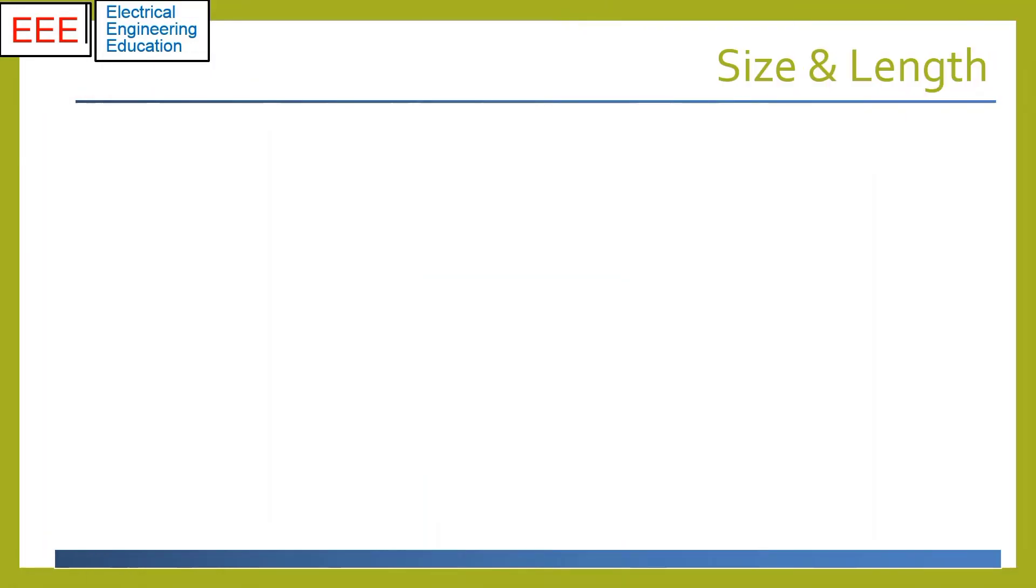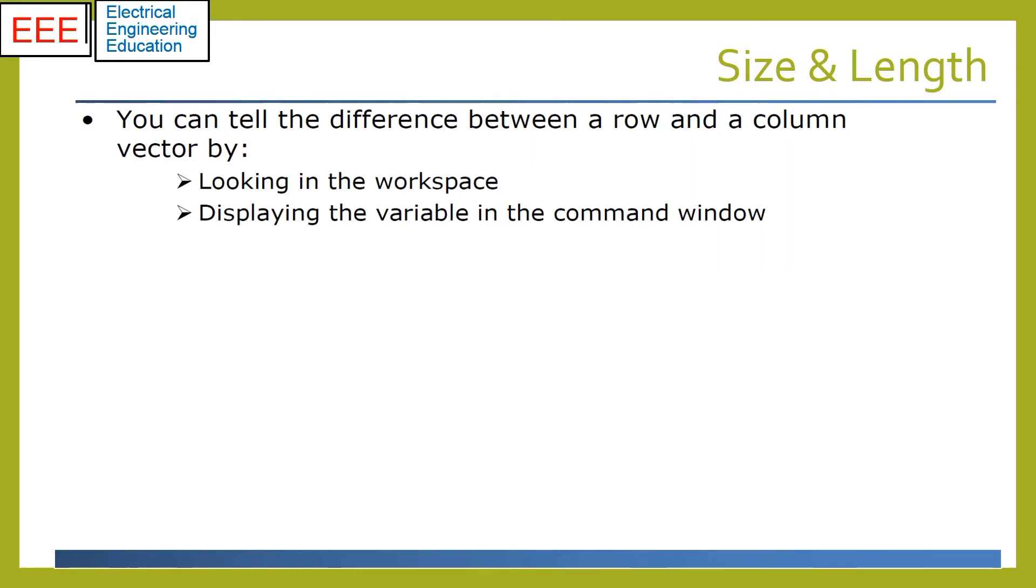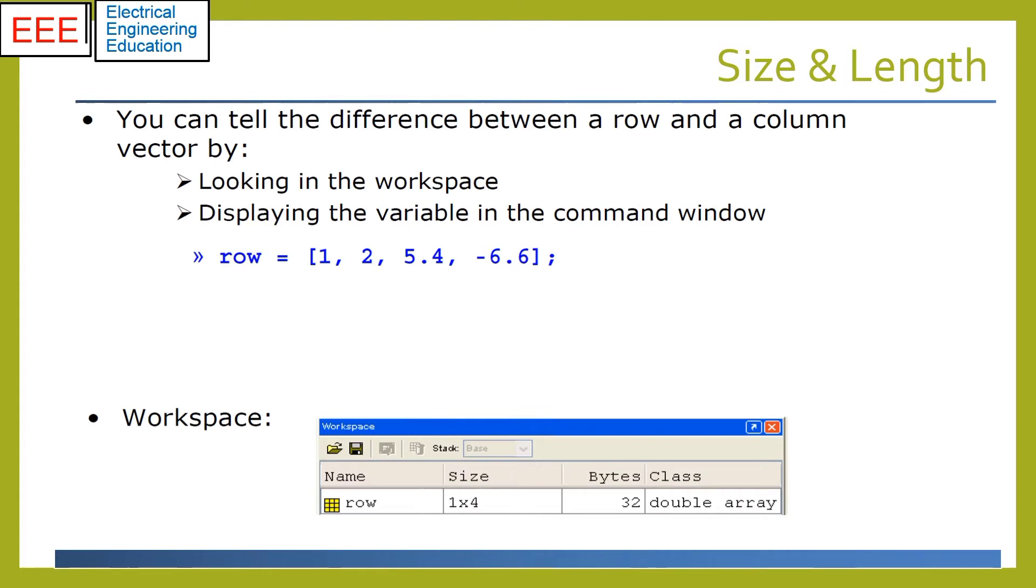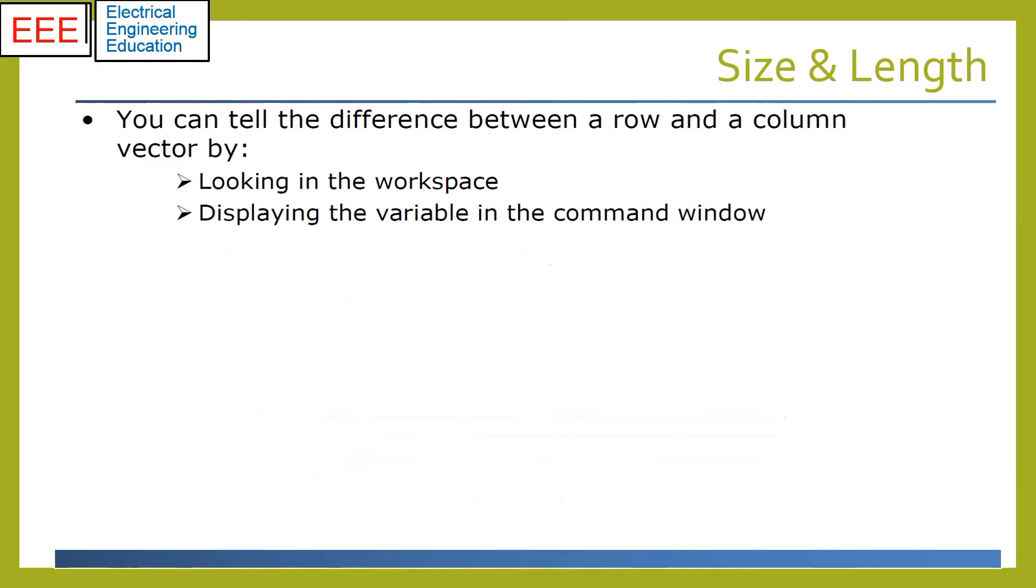Size returns the dimensions in terms of rows and columns of the defined matrix, whereas length returns only the number of rows or columns, whichever is bigger. The size can be found by looking in the workspace window for a particular variable, or displaying in command window. We can use the function size to find the dimensions. If the number of rows is more than columns, that's a column vector.